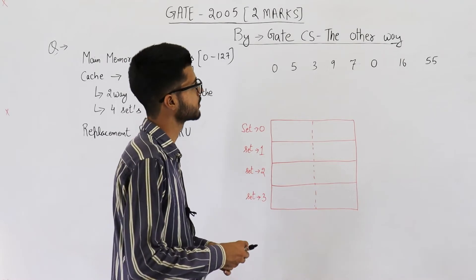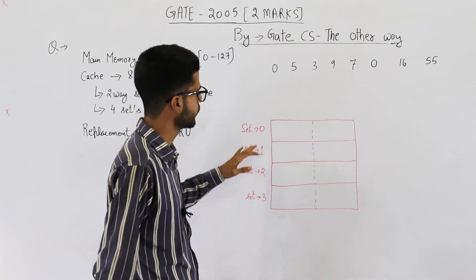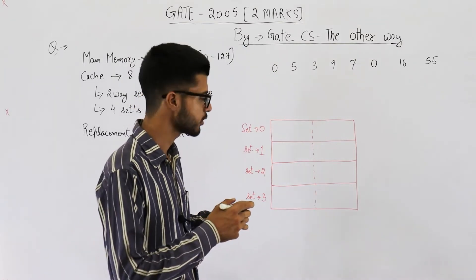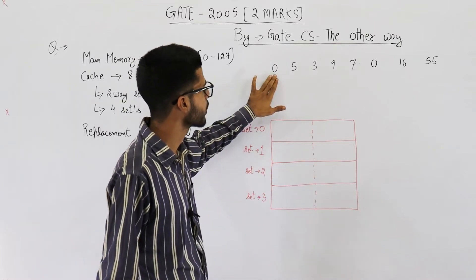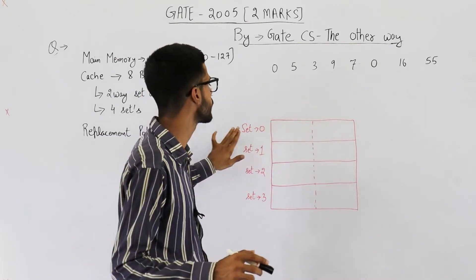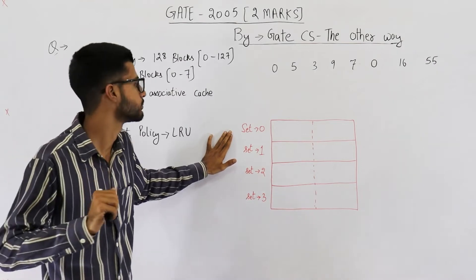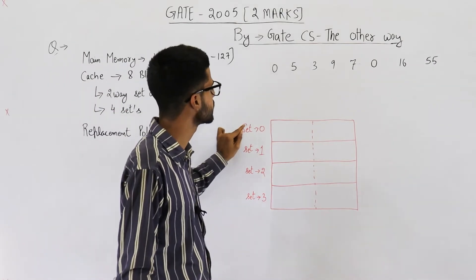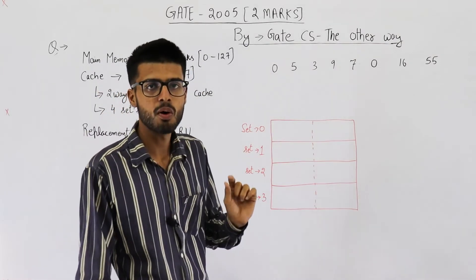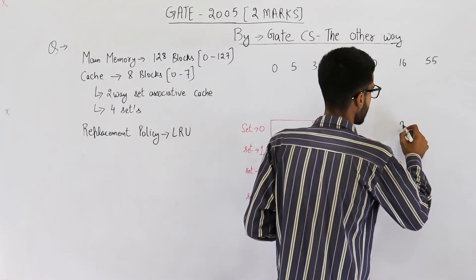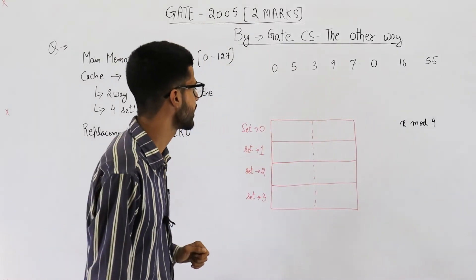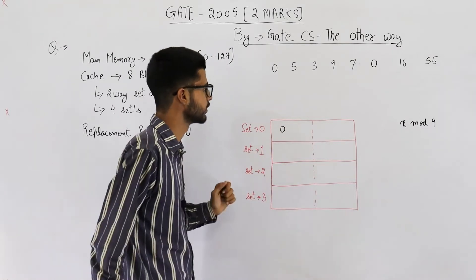First of all, let's try to execute this sequence. You know, we have 4 sets. These blocks will be mapped onto some set. Now, you cannot tell that this block will be mapped onto which line. This line or this line. But you can certainly tell it will be mapped onto set 0. Because we have total of 4 sets. Hence, we'll be using mod 4. So, formula is x mod 4. So, 0 mod 4 is 0. That means 0 will be mapped onto set number 0.